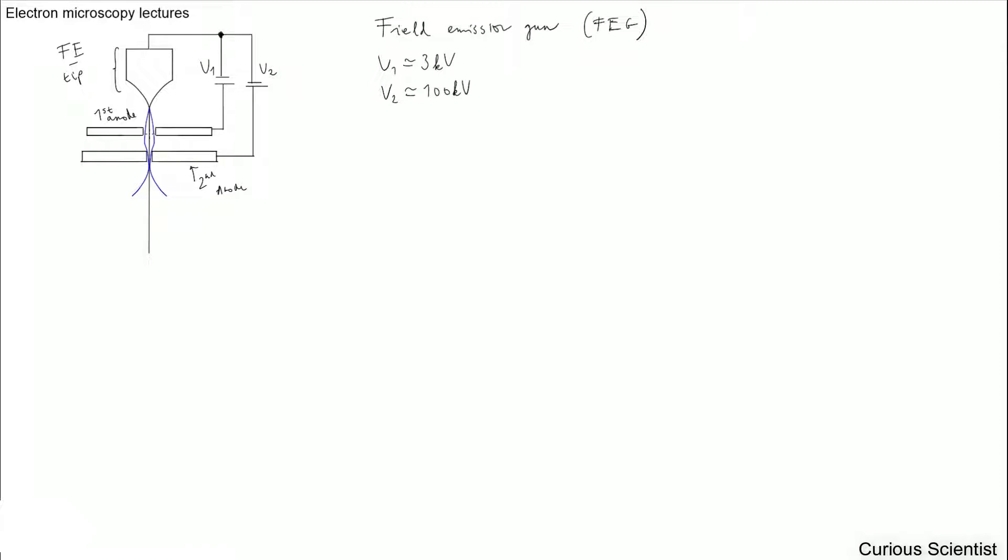So what's the difference between the previous guns and this current gun? So the previous guns, the tungsten guns and the lanthanum hexaboride guns, these both work with thermionic emission. So basically you heat up the piece of material, which is the tungsten filament or the lanthanum hexaboride crystal, and apply a field which will pull out the electrons.